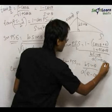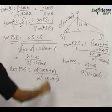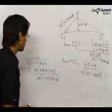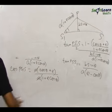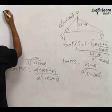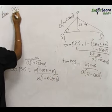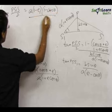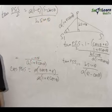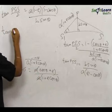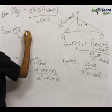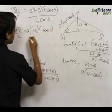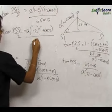Therefore, tan(∠PS₁S / 2) = [1 - (cosθ + e)/(1 + e cosθ)] / [b sinθ / (a(1 + e cosθ))], and on simplifying the A and (1 + e cosθ) terms, this becomes a(1 - e)(1 - cosθ) / (b sinθ). Doing the problem in similar fashion, tan(∠PSS₁ / 2) = a(1 + e)(1 + cosθ) / (b sinθ).